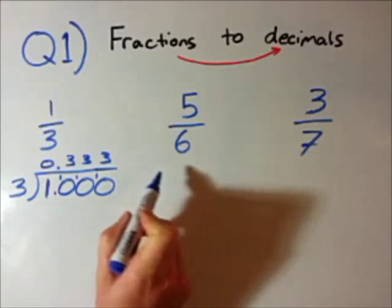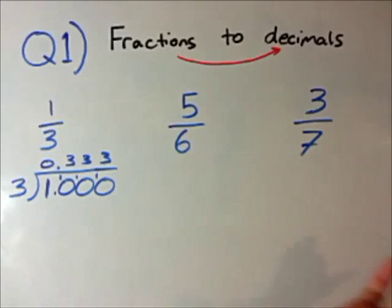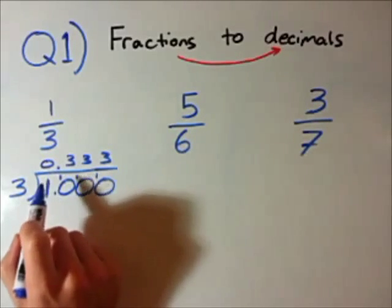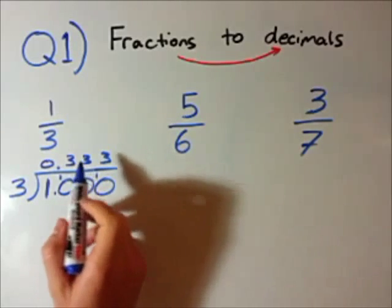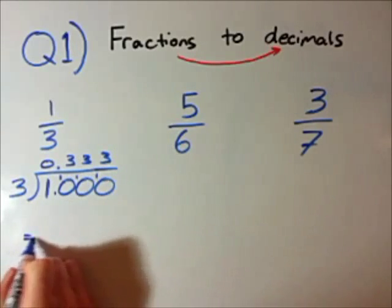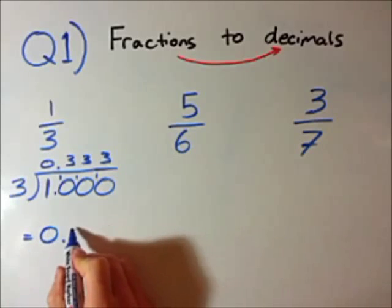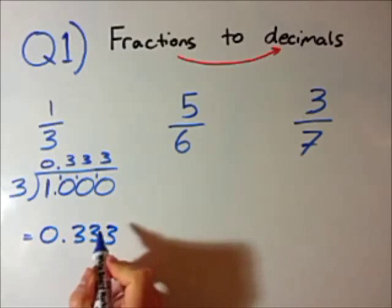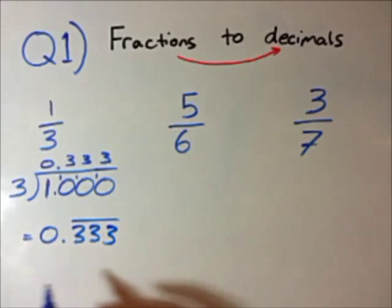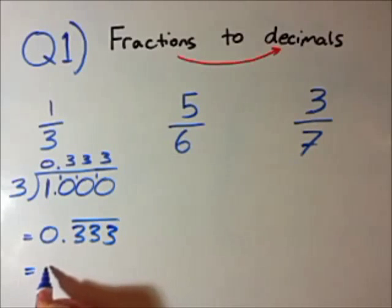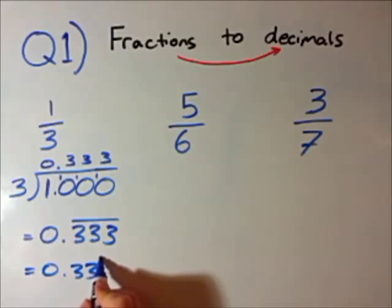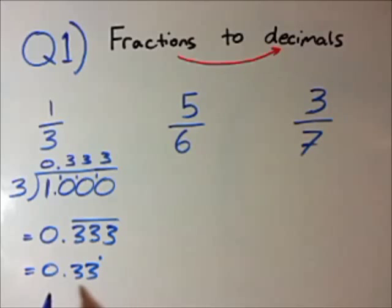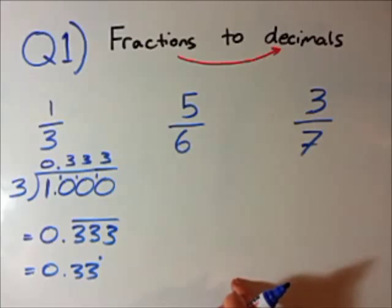It's 0.3333333 as long as I can say it, or I could say it as 0.33 recurring. This can be written in a number of ways — two main ways. It's either written with a line above, or it can be written as 0.33 with a little dot at the top. That means 0.33 recurring — it's just going to continue to recur like that.